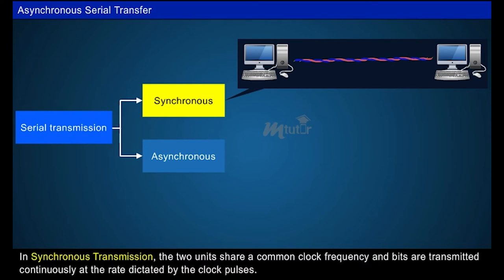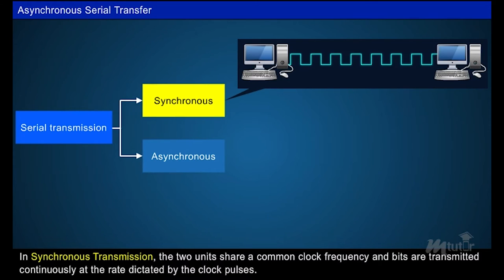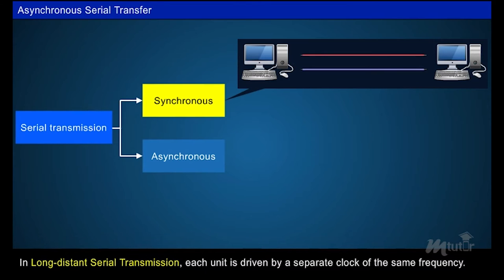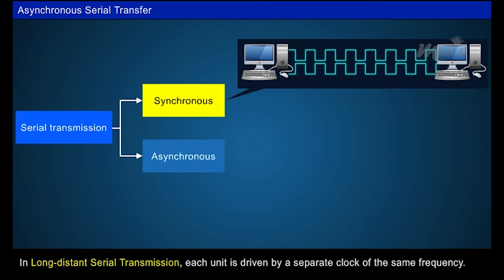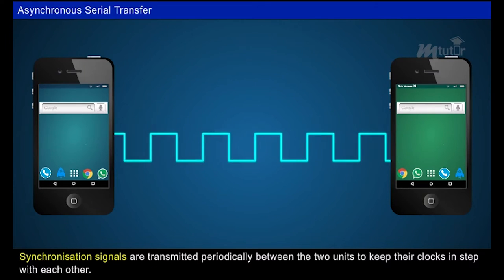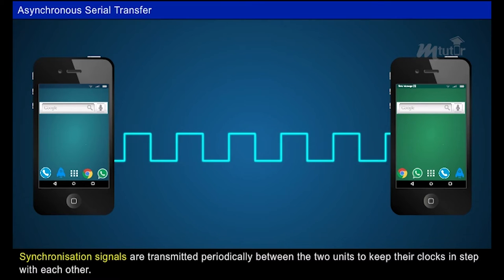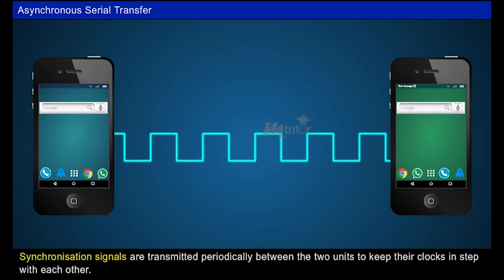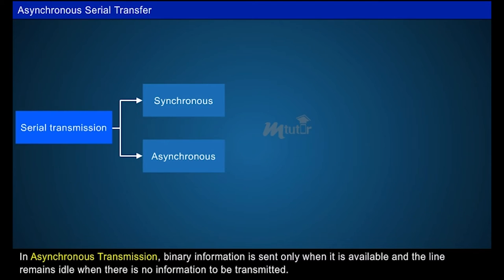In synchronous transmission, the two units share a common clock frequency and bits are transmitted continuously at the rate dictated by the clock pulses. In long-distance serial transmission, each unit is driven by a separate clock of the same frequency.